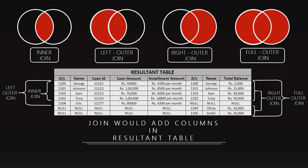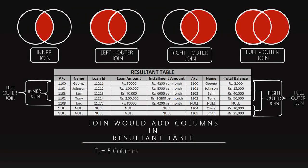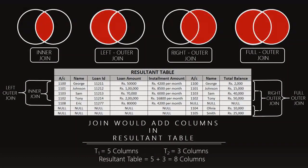So join would increase the number of columns. As you can see in the resultant table, it has 8 columns whereas the parent tables have 5 and 3 columns respectively — and 5 plus 3 equals 8 columns total.